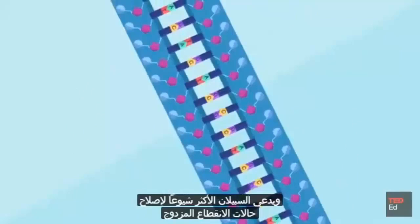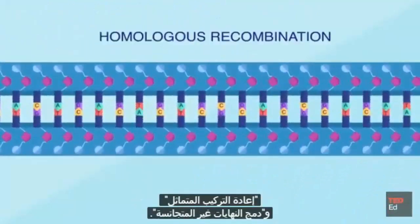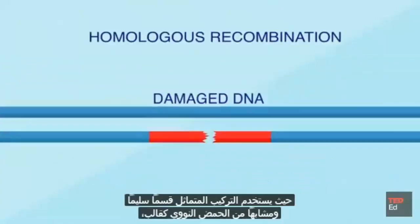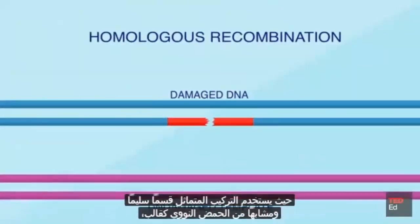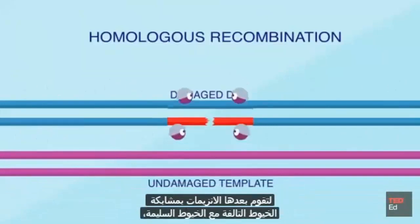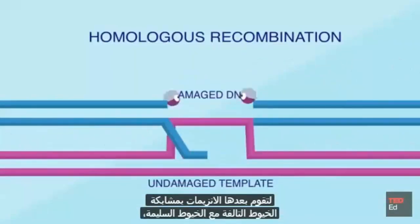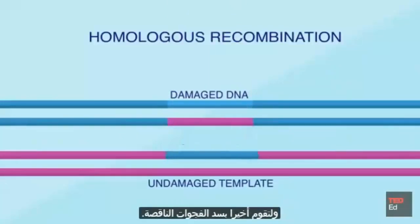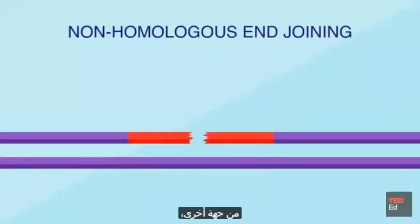The two most common pathways for repairing double strand breaks are called homologous recombination and non-homologous end joining. Homologous recombination uses an undamaged section of similar DNA as a template. Enzymes interlace the damaged and undamaged strands, get them to exchange sequences of nucleotides, and finally fill in the missing gaps to end up with two complete double-stranded segments.